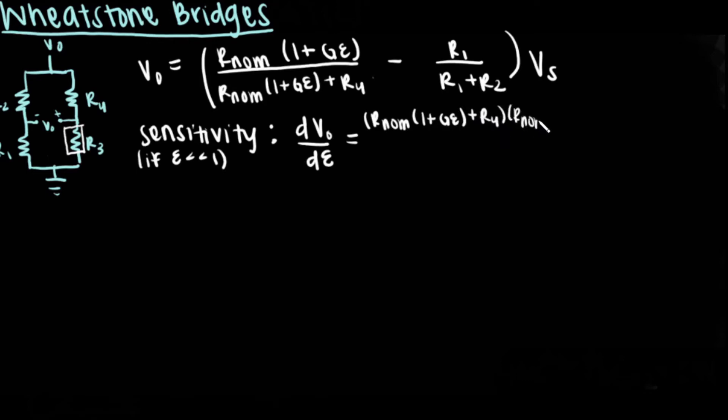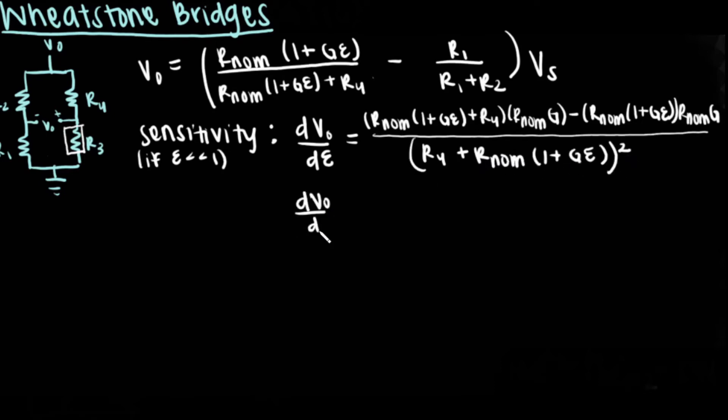Assuming the strain is much less than 1, the sensitivity to strain dV0 divided by DE can be determined by taking the derivative of V0 with respect to strain, which is shown in this first equation. You can then plug strain in as zero. Simplifying this by multiplying out the numerator yields the final third equation.